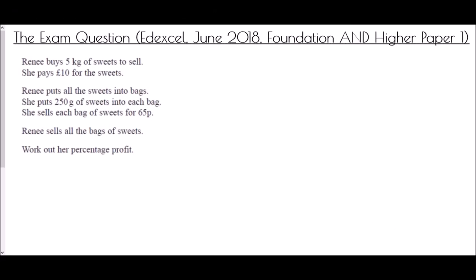And so we end with the exam question. It was on the Edexcel paper in June 2018. And it was on both foundation and higher paper one. And it says that Renee buys 5 kilograms of sweets to sell. She pays £10 for the sweets. Renee puts all the sweets into bags. She puts 250 grams of sweets into each bag. She sells each bag of sweets for 65p. Renee sells all the bags of sweets. Work out her percentage profit.